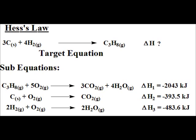The three known reactions are: first, propane gas plus five moles of oxygen goes to three moles of carbon dioxide plus four moles of water vapor (H2O gas), with a delta H of minus 2043 kilojoules. Second, solid carbon plus oxygen gas goes to carbon dioxide gas, with a delta H of minus 393.5 kilojoules. Third, two moles of hydrogen gas plus one mole of oxygen gas goes to two moles of water vapor, with a delta H of minus 483.6 kilojoules.